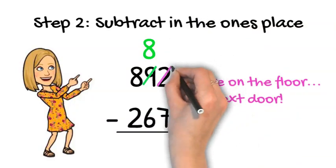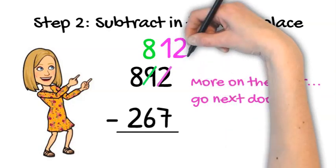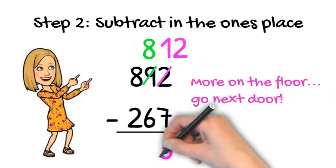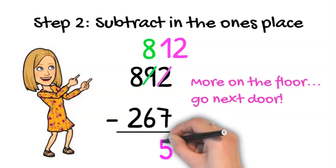Then we walk back next door with our ten stick. Now, we have a ten stick and two ones, so that makes 12. 12 take away 7 is 5. Our ones place is all ready to go.